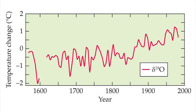The delta-18 oxygen in carbonates of marine organisms decreases with the temperatures of the surrounding seawater. Cores from the coral reefs at the Great Barrier Reef of Australia, dating as old as 1565, show that temperatures near the corals during the last half of the 20th century are as warm as they have ever been.